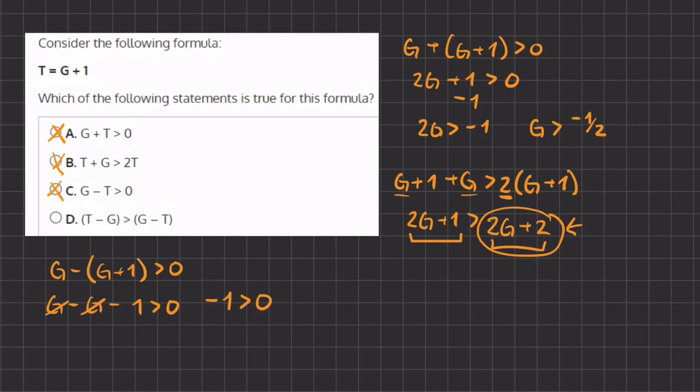Now, let's see why D is the right answer. Here we have, instead of T, we are going to write G plus one minus G is greater than G minus T, which is G plus one. All right. So now let's simplify. The G's cancel out over here, and we have one that is greater than G minus G minus one. So we distributed this negative into the parentheses.